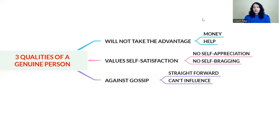To summarize, these are the three qualities of a genuine person. First, a genuine person will not take advantage of money or health frequently. Second, a genuine person values self-satisfaction and is against self-appreciation and self-bragging. Third, a genuine person is against gossip, is straightforward, and cannot be influenced by people or materialistic things. Thank you.